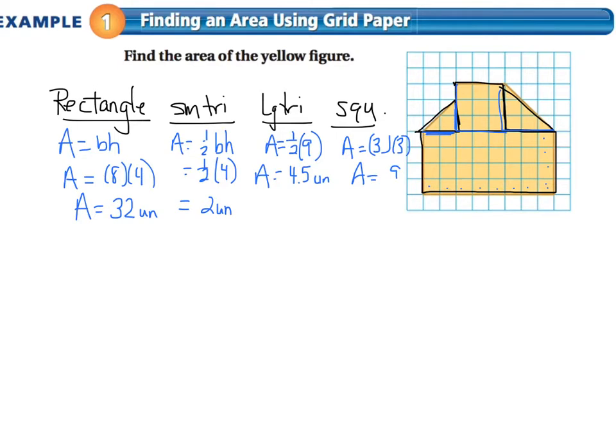So if I add these all up, that would give me, let's see, 32 plus 2. That gives me 34. Plus 9 is 43. 43 plus 4.5 gives me 47 and a half square units. And I just realized I labeled all these wrong. These should all be squared. So my answer would be 47 and a half square units.